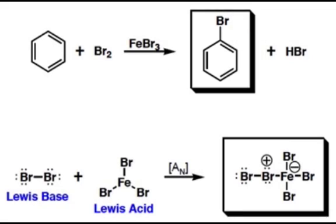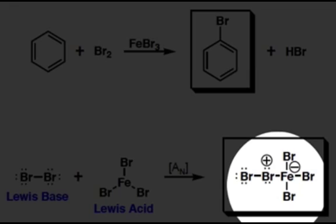The real key to electrophilic aromatic substitution reactions is generating strong enough electrophiles that can react with weakly nucleophilic benzene rings. We've seen the reaction of bromine with other pi bonds, such as alkenes, that did not require a Lewis acid catalyst. However, the pi bonds of a benzene ring are much more stable than simple alkenes and require the generation of a much stronger electrophile.